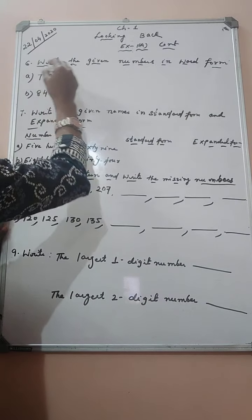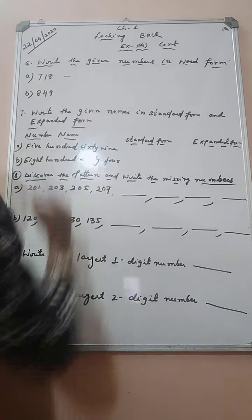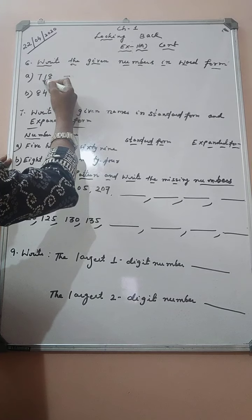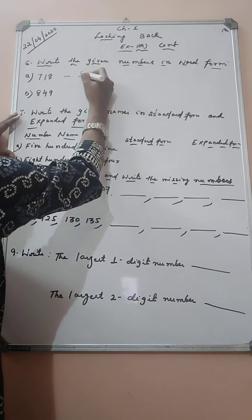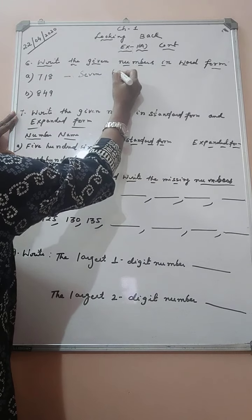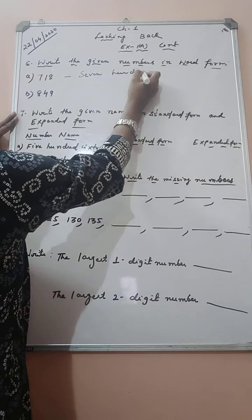Okay, our question is given in the standard form. We have to write the answer in word form. So let us read the number first. Our number is 718. It can be written in word form as seven hundred eighteen.